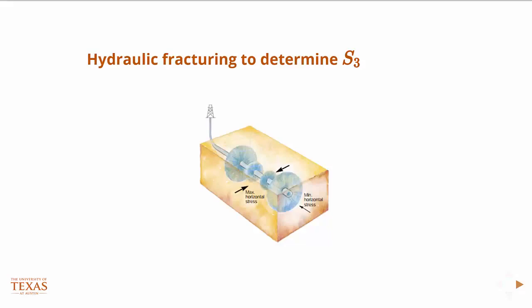So one way that we can, it's a pretty reliable way to find S3. And you notice I don't say necessarily that this is a horizontal principal stress, because you could possibly be in a scenario where the vertical principal stress is the minimum. You can do hydraulic fracturing techniques, tests essentially, to determine the minimum principal stress, which is either the minimum horizontal stress or the vertical stress.